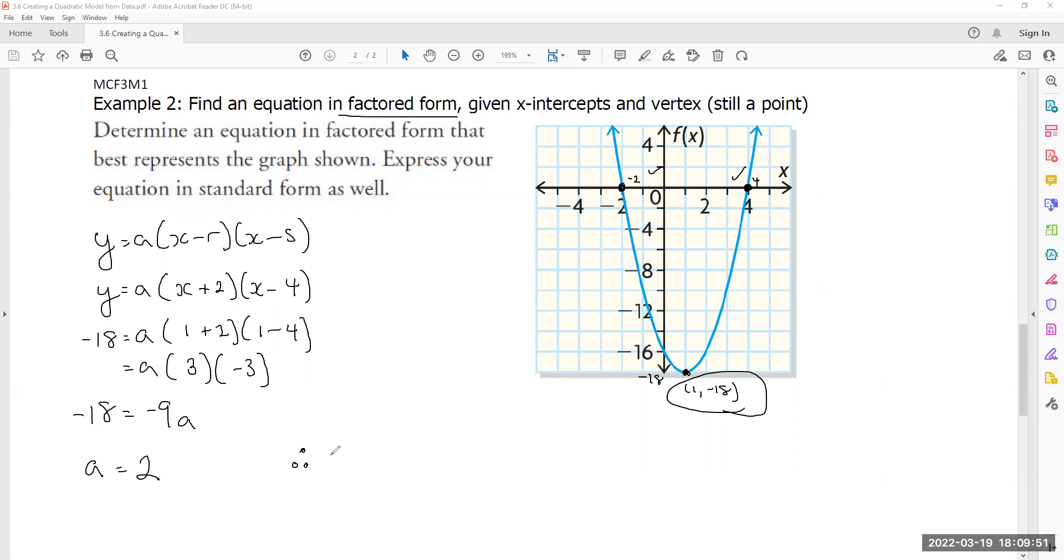Therefore, my equation is y equals 2(x + 2)(x - 4). The x's and the y are left empty or left unspecified as variables, because that's the whole point of an equation, where if you plug in an x value, you get yourself a y value. So they should be blank at the end of the day. This is my equation. That's it.